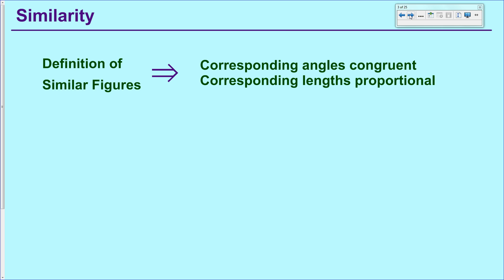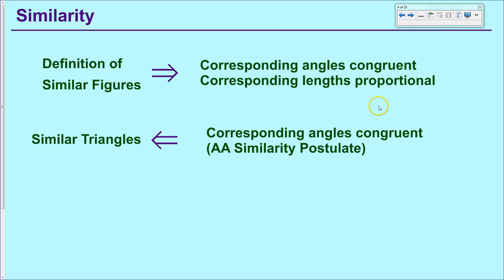So far we've had a theorem that talks about this first statement, that all corresponding angles are congruent, specifically with triangles. And if we assume this part of it, it forced that it was similar. So we're going to start trying to work this definition of similar figures to the left rather than to the right, assuming some of these things on the right hand side in order to show the things on the left.